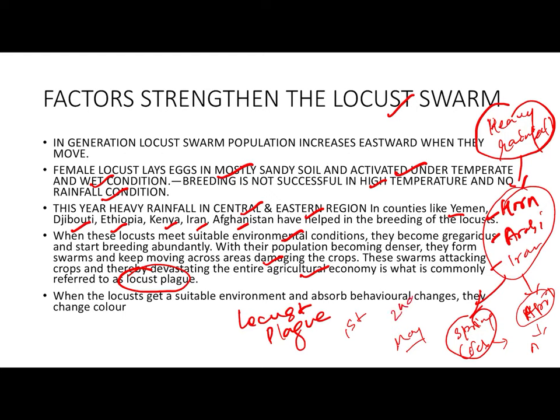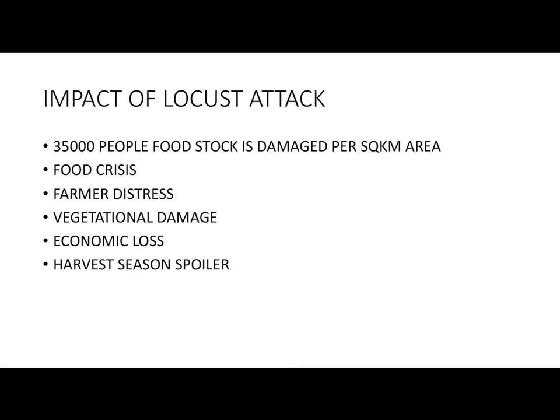Locusts change color and behavior according to environmental conditions. The desert locust moves toward India starting from two areas — one from Africa and one from the Iran-Pakistan side. As they move eastward, the swarm population increases, and consequently the impact on India is more adverse.